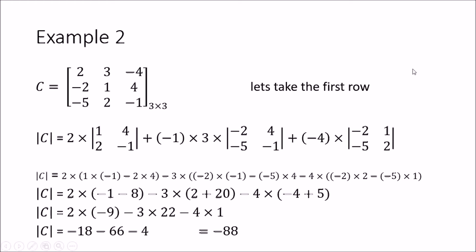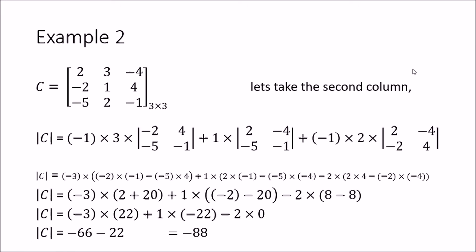Now we will use the same example but with a different row or column — in this case, the second column, which contains the values 3, 1, and 2. Starting the calculation: we take the first element of the second column, which is 3. From the sign convention, the value associated with this 1,2 position is minus. So we have minus 1 multiplied by 3, into the determinant of the submatrix obtained by removing that row and column, leaving minus 2, 4, minus 5, and minus 1.